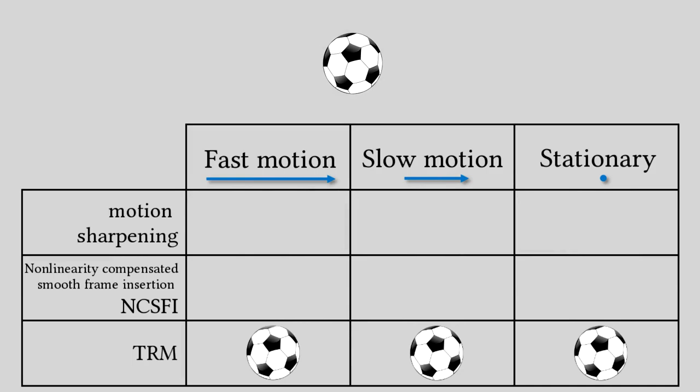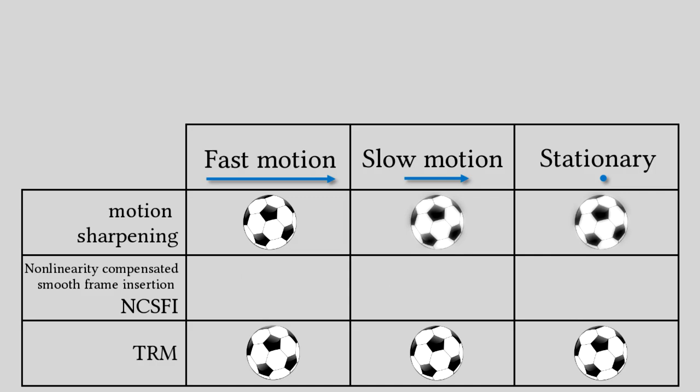Previous methods tried inserting smooth frames between sharp frames. When the content motion is fast, the video appears sharp due to the motion sharpening effect, but when there's little or no movement, the video appears blurry. The sharp frames can be enhanced to compensate for blurriness, but this is sometimes impossible thanks to the limited dynamic range of a display. This can be avoided with a residual buffer, which postpones missing enhancements until the next frame. For moving content, however, this can introduce ghosting artifacts.